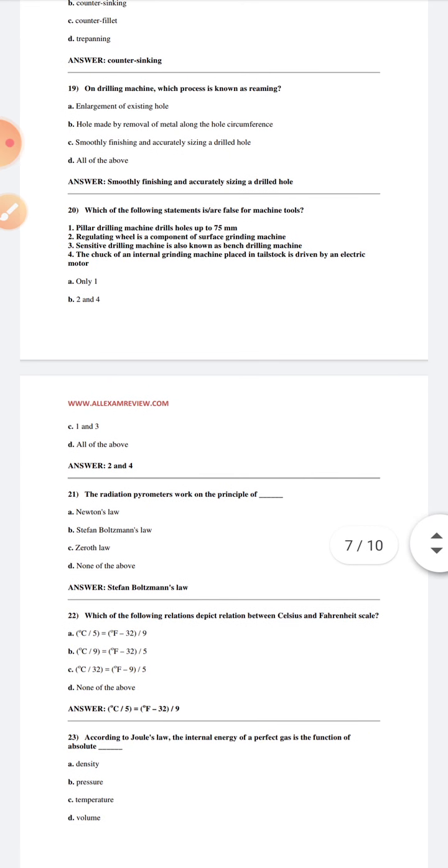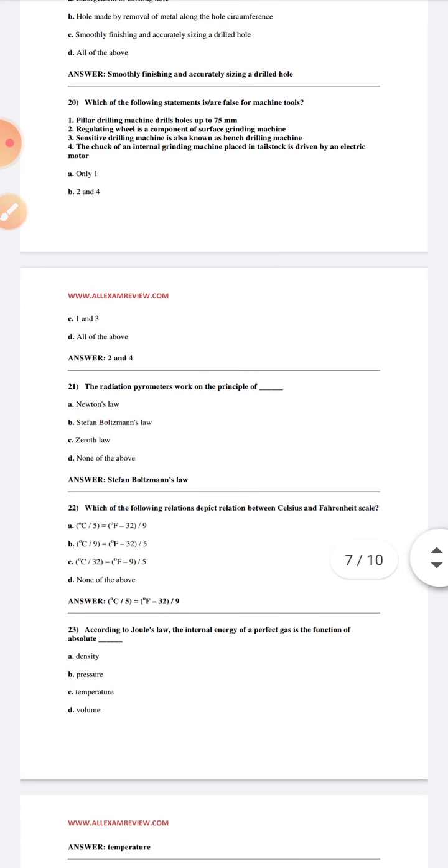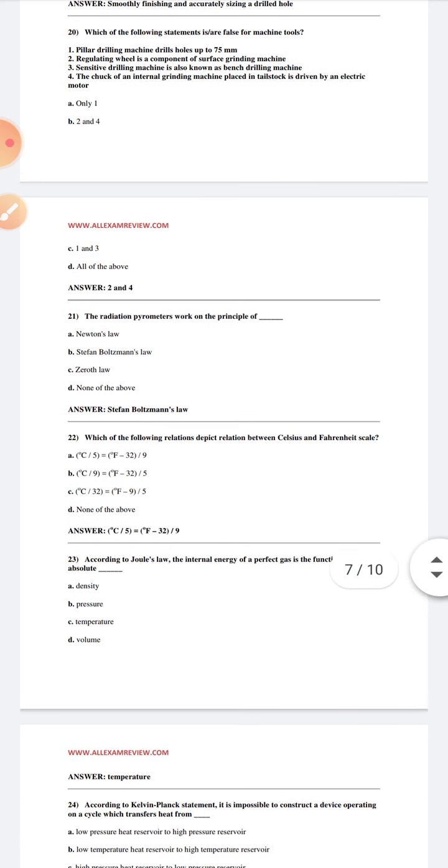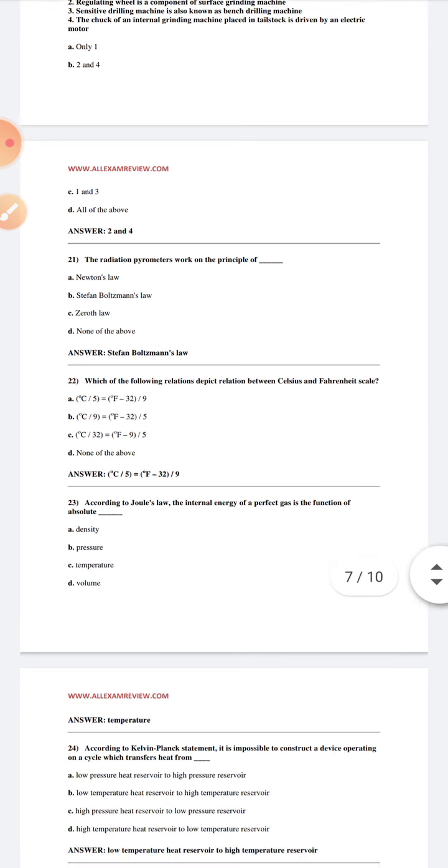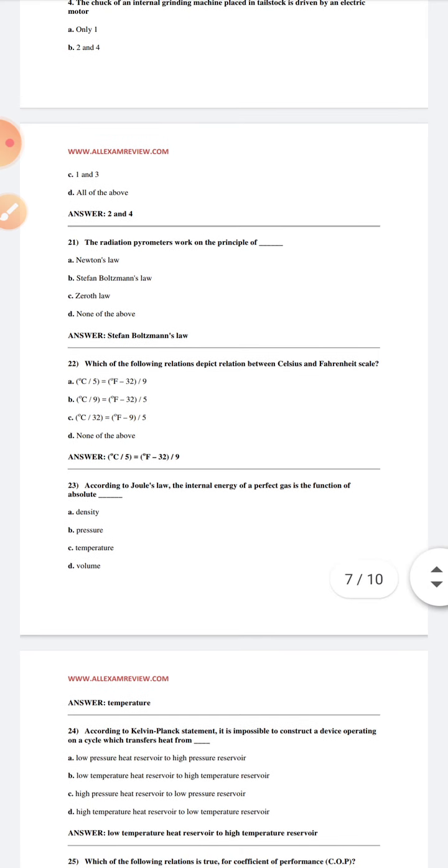The radiation parameters work on the principle of Stefan-Boltzmann laws. Which of the following relation depicts the relation between Celsius and Fahrenheit? C/5 is equal to (F-32)/9. According to Joule's law, the internal energy of a perfect gas is a function of absolute temperature.